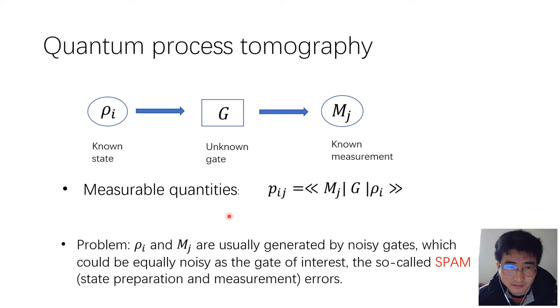But here, there is a problem. Because the set of states and measurements are also prepared by noisy gates, these noisy gates could be equally noisy as the gate of interest. This is the so-called SPAM errors.